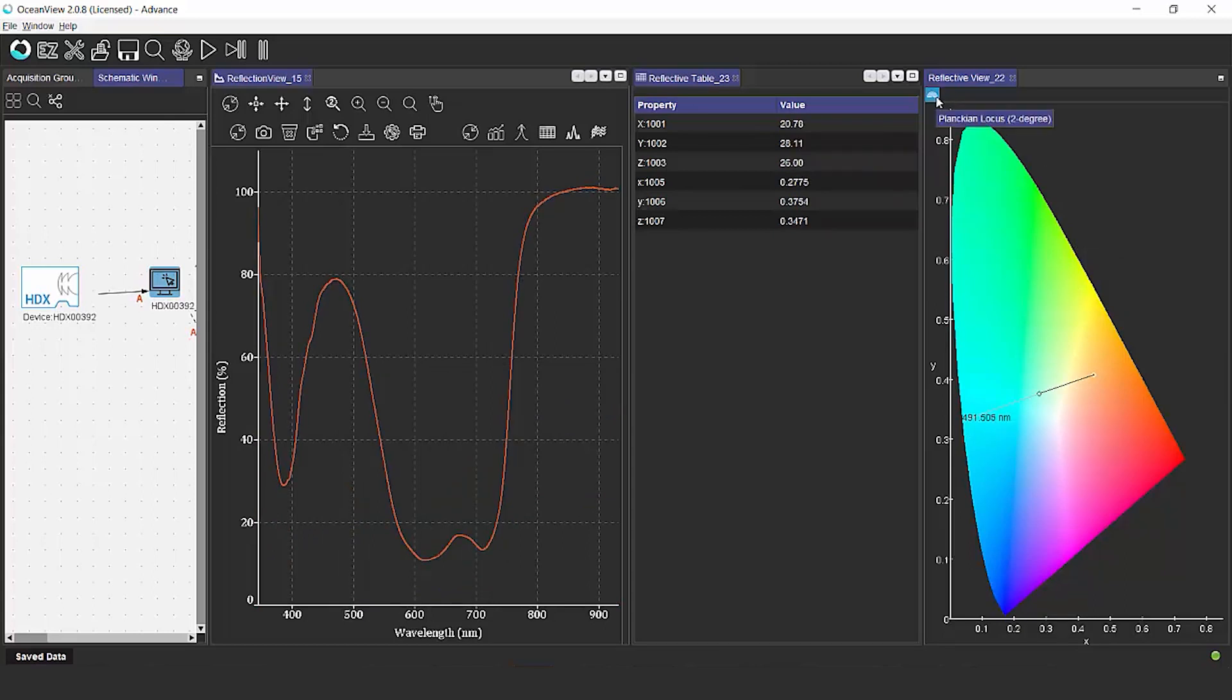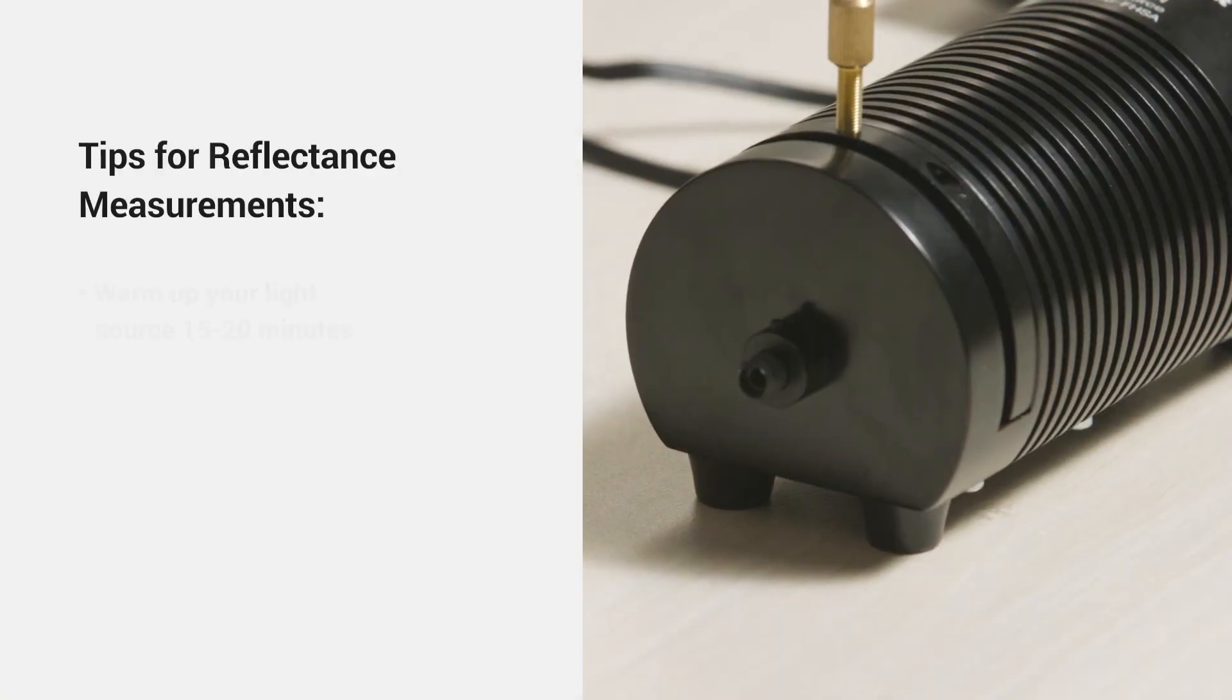Whether you're looking at color consistency, matching paint colors, we're actually getting quantitative values that will enable us to ensure great consistency. So what we've gone over today are the critical steps required to set up your diffuse reflection measurement.